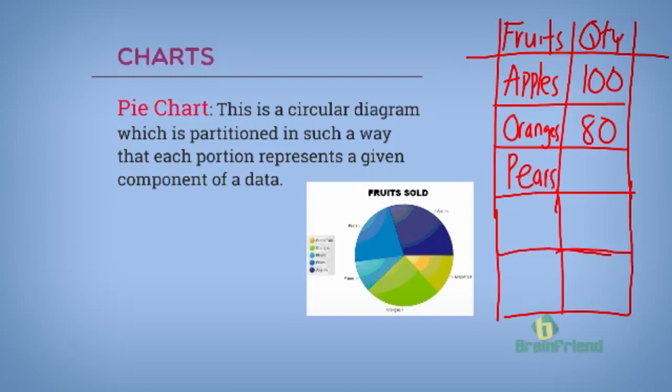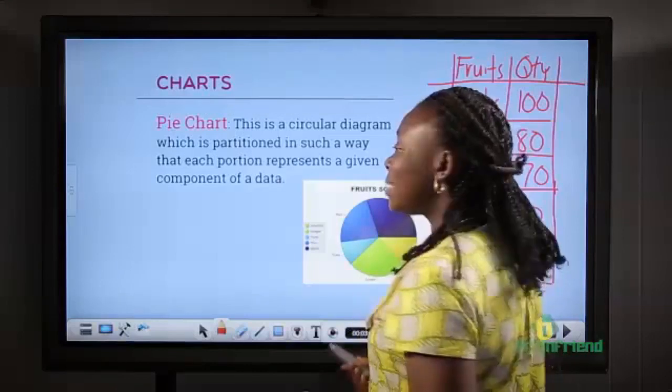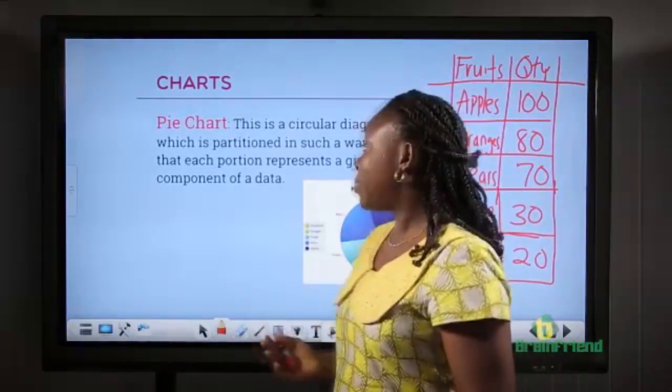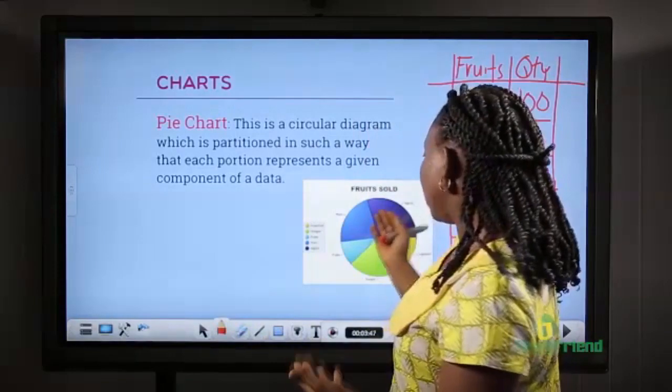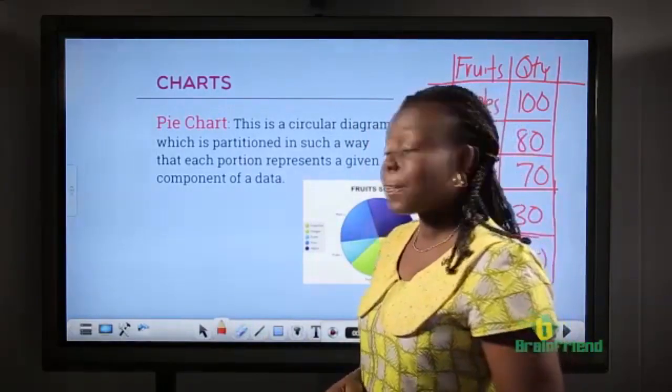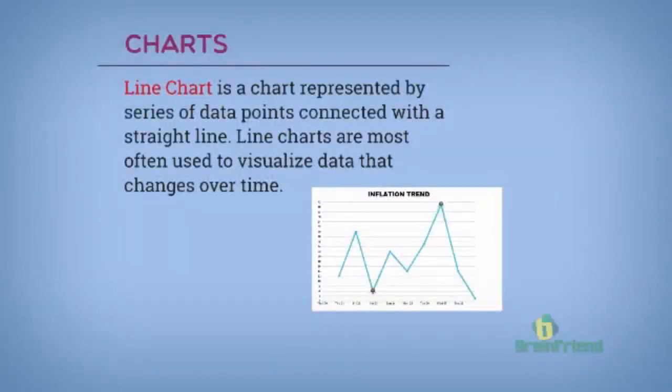Pears, we sold 70. Then we have grape fruit and plum. We sold 30. And for plums, we sold 20. This is a simple representation of this table on a pie chart.